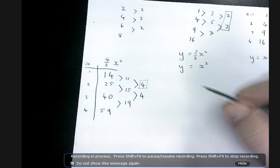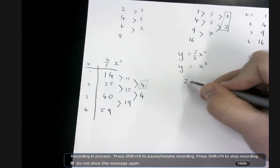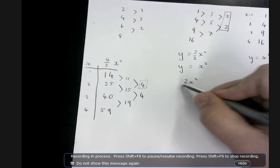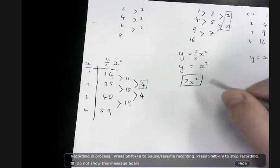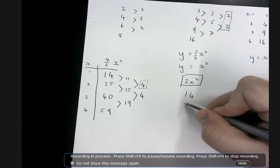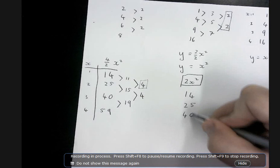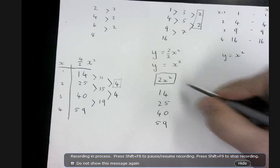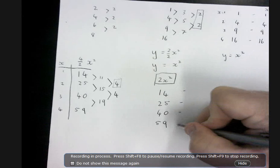So, so far, our rule is 2x squared. That's what we're working off at the moment. We're not done. So, if I write the patterns again. 14, 25, 40, 59. And now I'm going to subtract 2x squared.